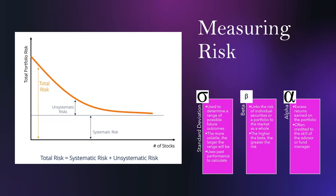There are also a few other ways to measure risk. One of these is standard deviation, which is used to determine a range of possible future outcomes. The more volatile a stock is, the larger the range will be, and it does use past performance to calculate it.